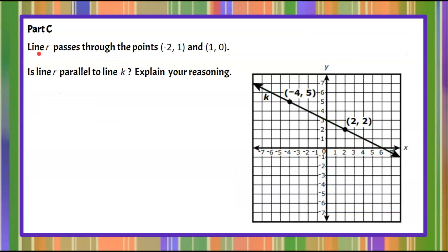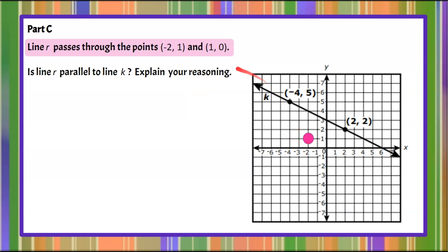Moving on to part c. We're told that line r passes through the points (-2, 1) and (1, 0). You're asked: is line r parallel to line k? Explain your reasoning. We plot the point (-2, 1) and (1, 0), and we can draw our line. We can already see that it doesn't look parallel, but seeing isn't explaining our reasoning.